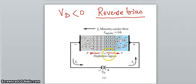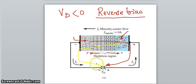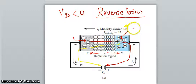Now, there are some minority charge carriers present. In n-type, there are few holes available; in p-type, there are few electrons available. These electrons get strong attraction towards the positive terminal under high reverse bias voltage, and the holes get strong attraction towards the negative terminal. Due to this, some amount of current flows — this is called minority charge carrier current. This current is very small in amount because the carriers are very few in number, usually flowing in nano amperes.